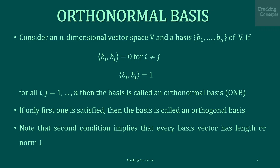First we will discuss the special case where the basis vectors are orthogonal to each other and where the length of each basis vector is 1. We will call this basis the orthonormal basis. Consider an n-dimensional vector space V and the basis b1 to bn. Then if the inner product of bi and bj is 0 for i not equal to j, and the inner product of bi and bi is 1 for any value of i in the range 1 to n, then the basis is called an orthonormal basis.